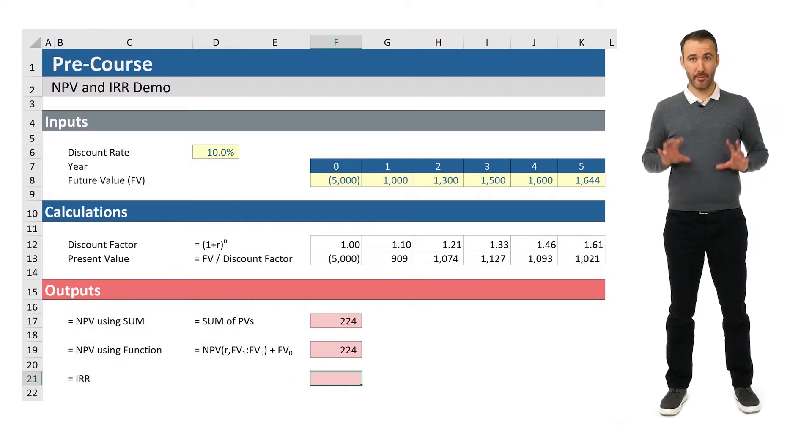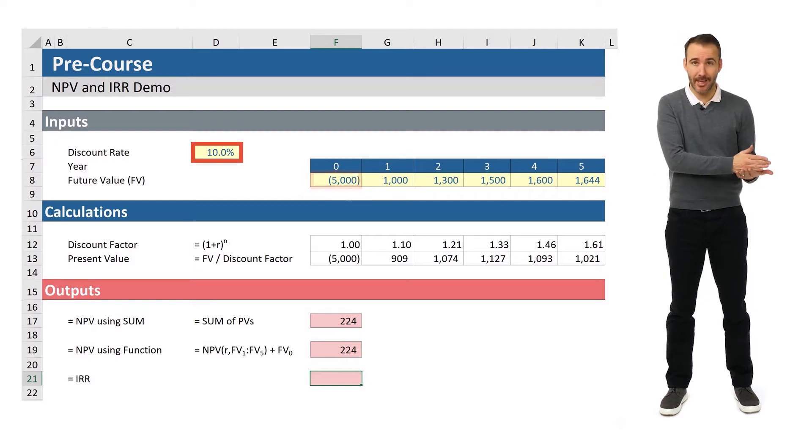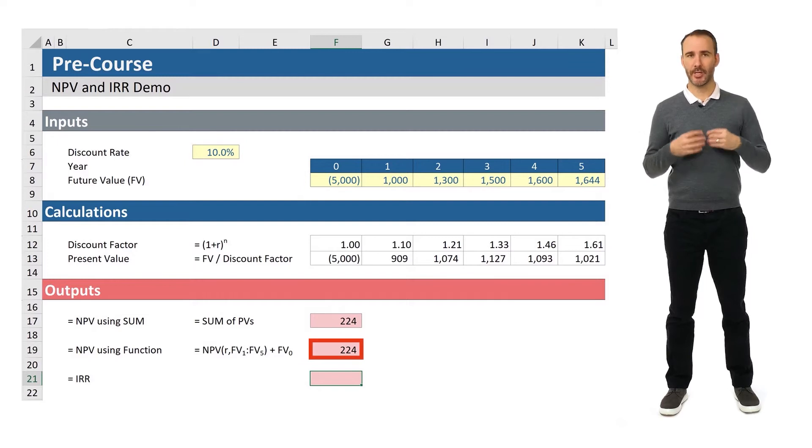In the demo file from the prior lesson, if I could buy that investment for $5,000 and my discount rate is 10%, I would enjoy a net present value of $224. The NPV is a lot higher than zero. So the IRR on that investment must be higher than 10%.